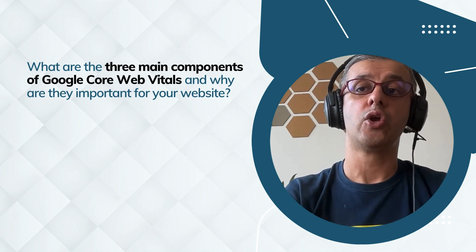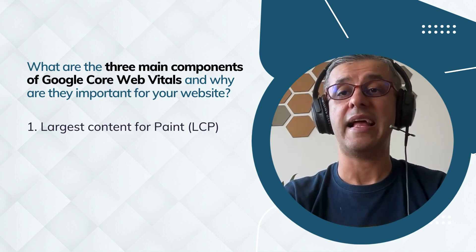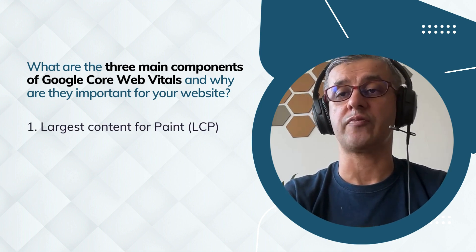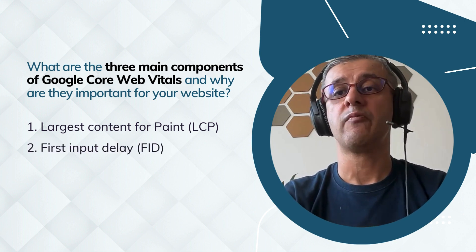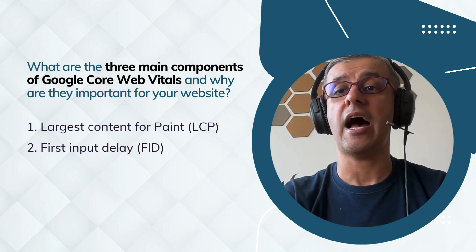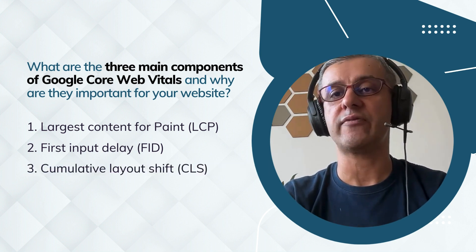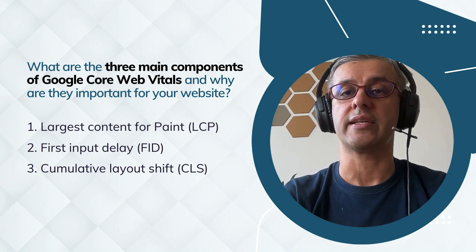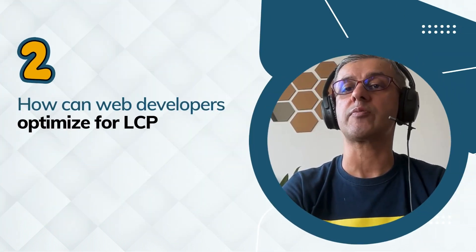There are three factors which really impact your Core Web Vitals. Number one is Largest Contentful Paint (LCP), which measures the loading performance of your site. Number two is First Input Delay (FID), which measures the interactivity of your site and how usable it really is. Finally, number three is Cumulative Layout Shift (CLS), which measures the visual stability of your site. These are all important factors that impact user experience and influence your SEO rankings.